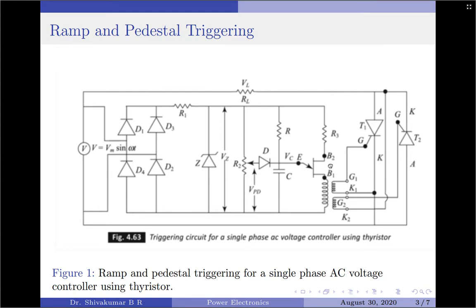The threshold voltage of the UJT is given as η·Vz, where η is called the intrinsic standoff ratio of the UJT and varies between 0.5 to 0.8. The pedestal voltage Vpd can be controlled by changing the wiper position, and it is always lesser than the threshold voltage of the UJT, which is η·Vz. It is very important that we always ensure the pedestal voltage is less than the threshold voltage of the UJT.